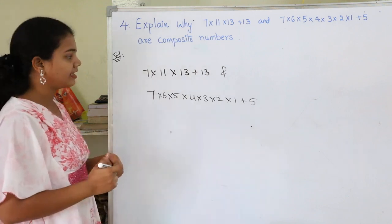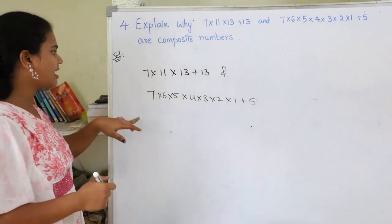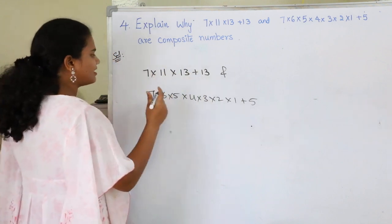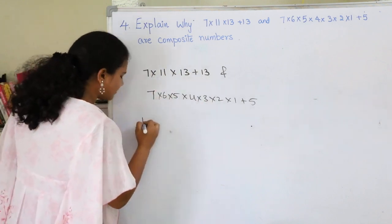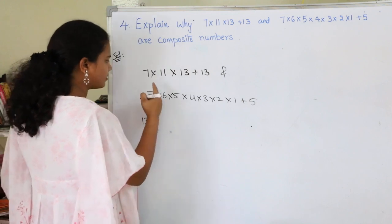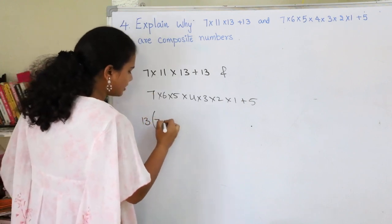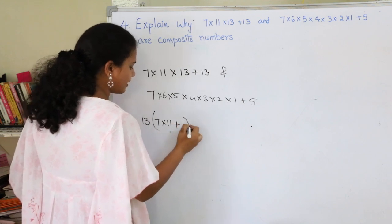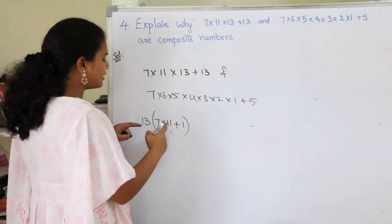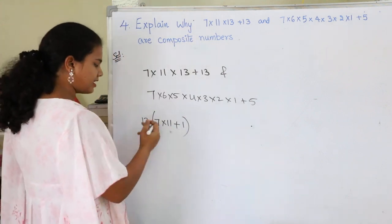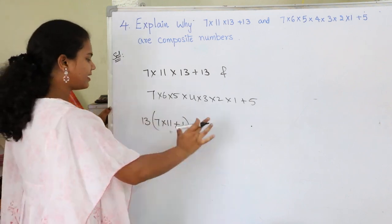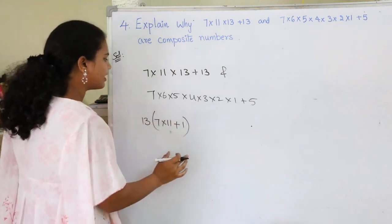For the first one, 7 × 11 × 13 + 13, take 13 as common. This gives 13 times (7 × 11 + 1), where 13 × 1 gives 13.